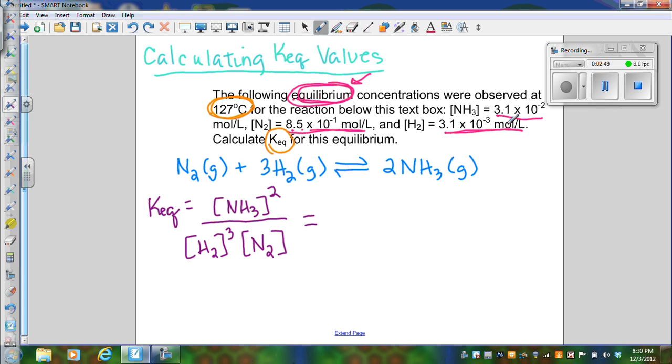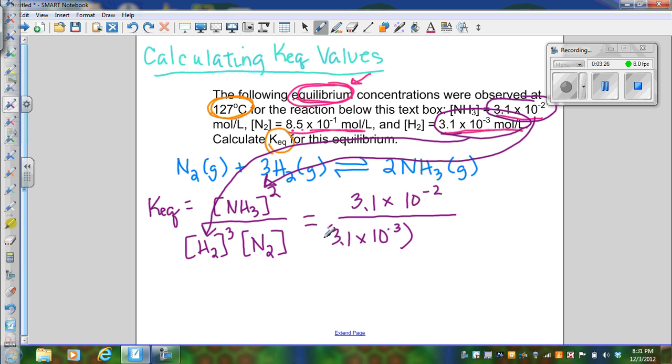The next thing I'm going to do is take these equilibrium concentrations and substitute them into the expression. I'm going to take this value for ammonia: 3.1 × 10^-2 moles per liter. Then I'm going to find hydrogen: 3.1 × 10^-3, and this needs to be cubed. Hopefully you caught that I forgot this needed to be squared. Now I need to include nitrogen. Nitrogen's concentration is 8.5 × 10^-1, and then I'm going to solve.